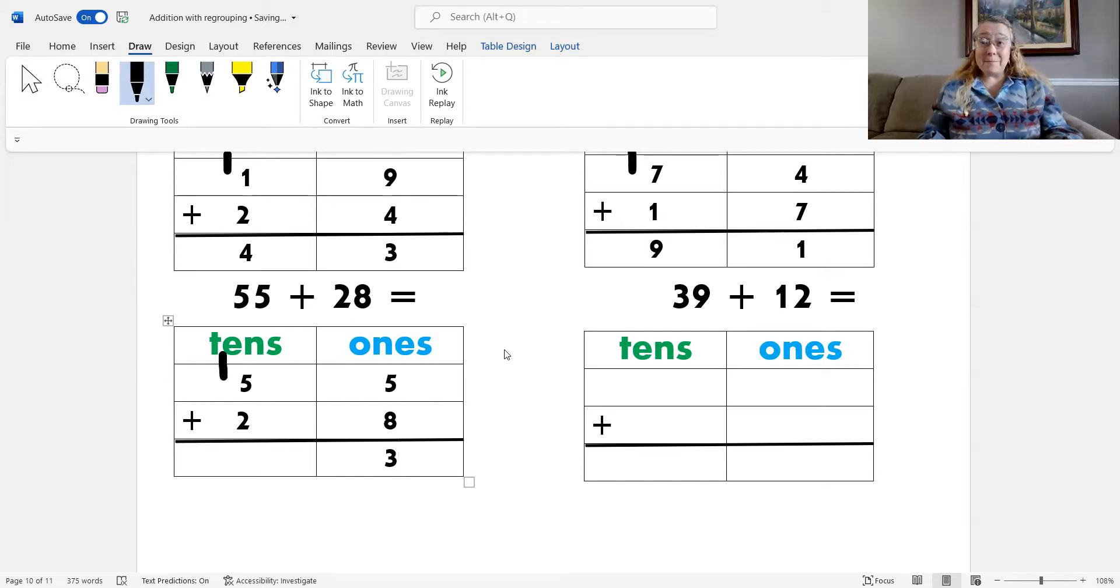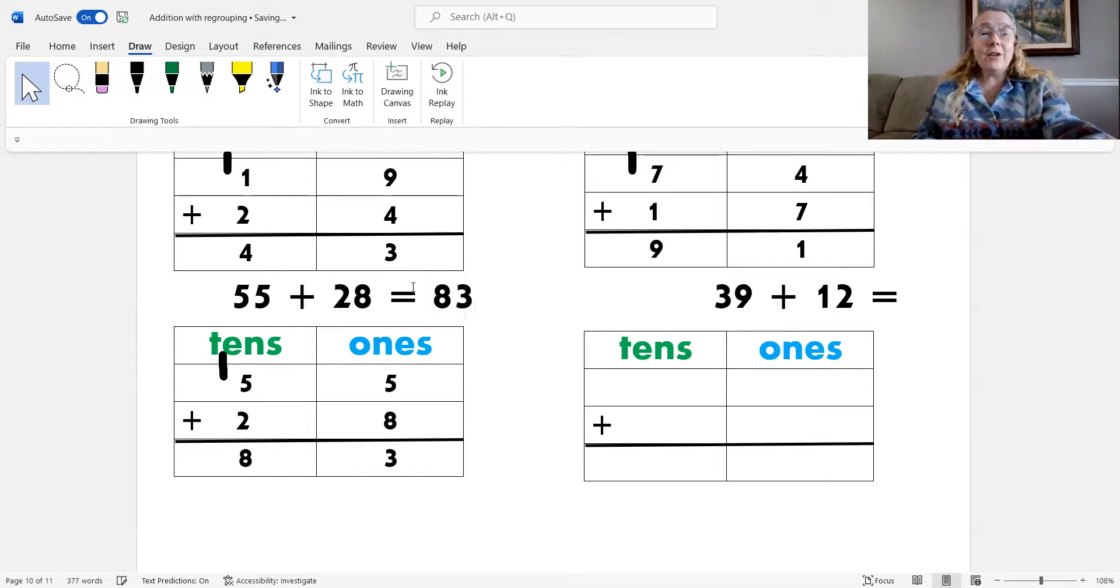And what's my last step? You got it. Add the tens. So, 1 plus 5 is 6 plus 2 is, yes, 8. So, I know that 55 plus 28 equals 83. Very good. Okay.